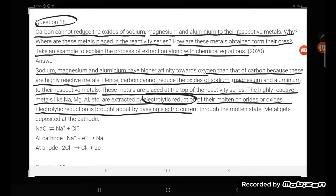Electrolytic reduction is brought about by passing electric current through the molten state. Metal gets deposited at cathode.